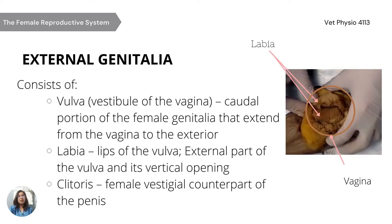The external genitalia consists of the vulva, labia, and clitoris. The vulva, or vestibule of the vagina, is located in the caudal portion of the female genitalia and extends from the vagina to the exterior. The labia, or lips of the vulva, is the external part of the vulva with its vertical opening. The clitoris is the female vestigial counterpart of the penis, concealed by the lowest part of the vulva and supplied with erectile tissue and sensory nerve endings.